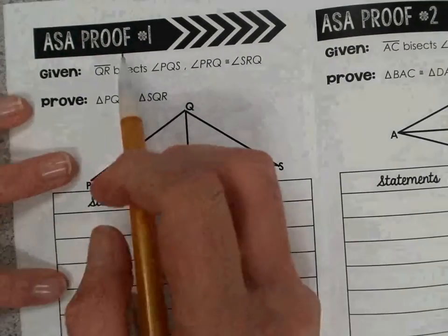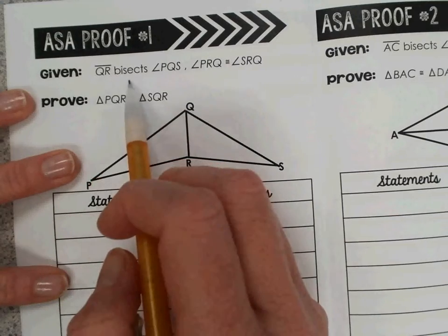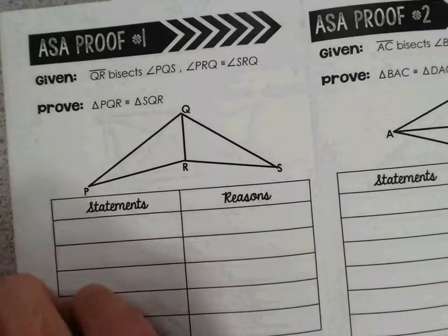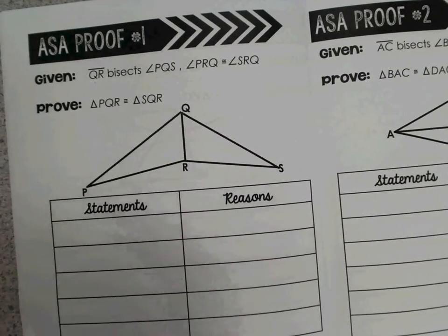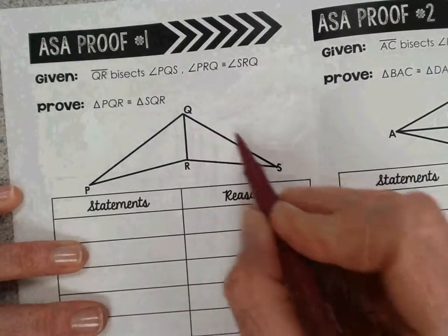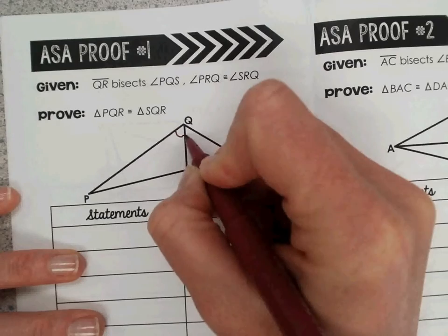So we have this given information: QR bisects angle PQS. We always like to take that information and label the diagram accordingly. So QR bisects PQS. Bisects means cuts the angle in half, creating two congruent angles.